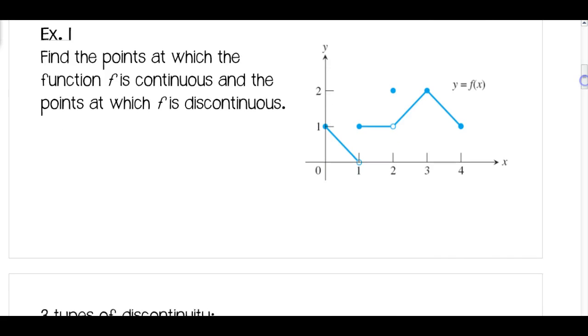When we take a look at this example here, we're given this graph of f of x and we want to find the points at which the function f is continuous and the points at which f is discontinuous. So let's talk about where it's continuous. At x equals 0, it's going to be continuous. We know that because the limit as x approaches 0 from the positive side of f of x is going to be the value of the function at 0, which is 1.